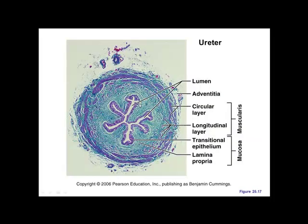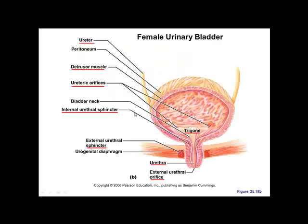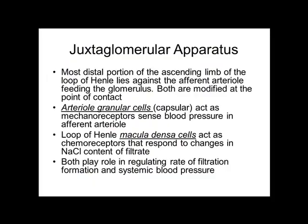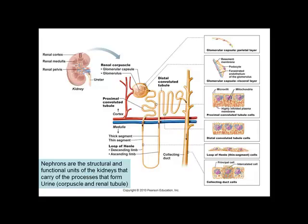The ureter has a circular layer of muscle and a longitudinal layer of muscle — circular wraps around, longitudinal runs straight along the length. There's also a mucosal layer and a submucosal layer.